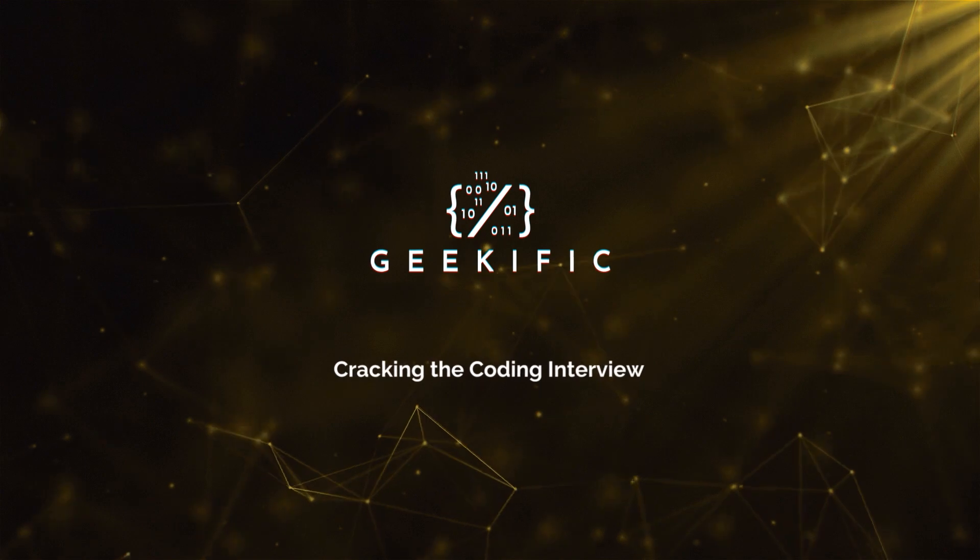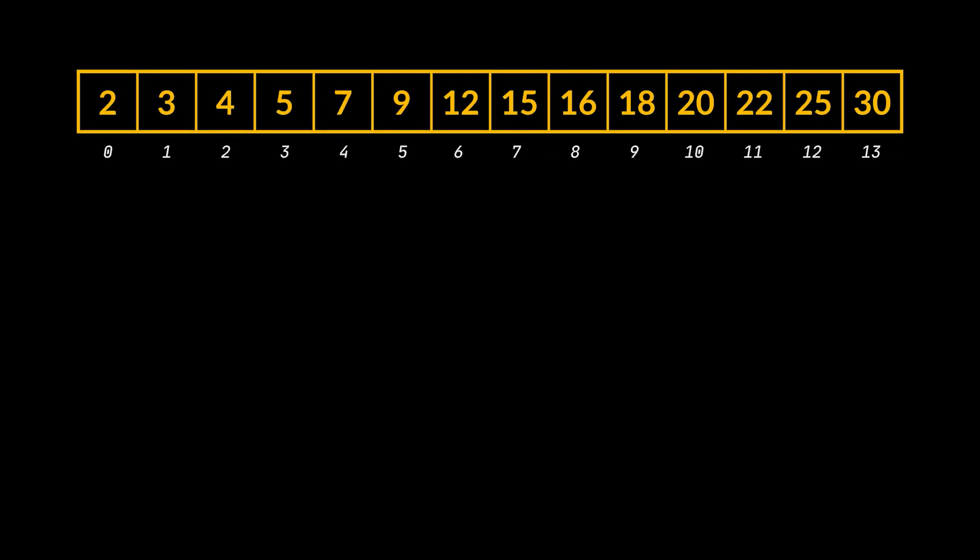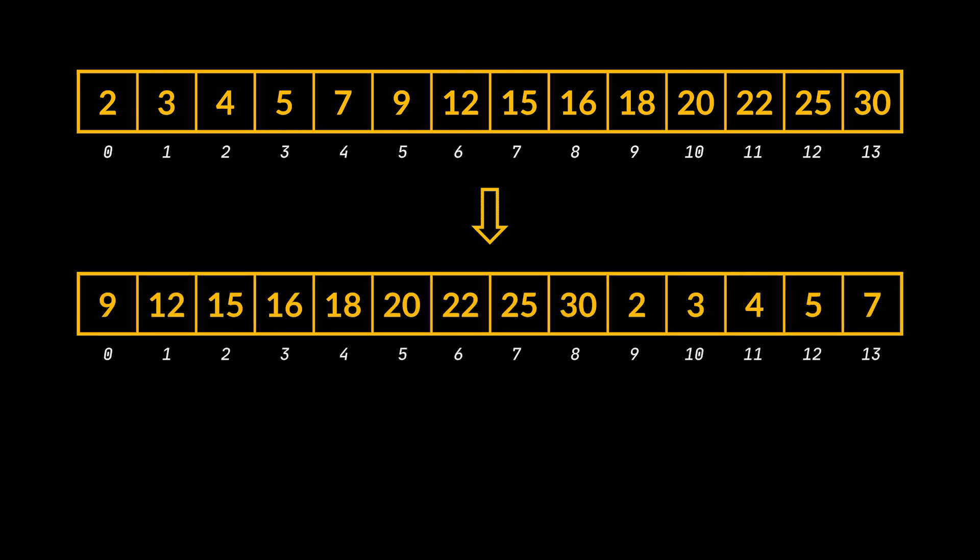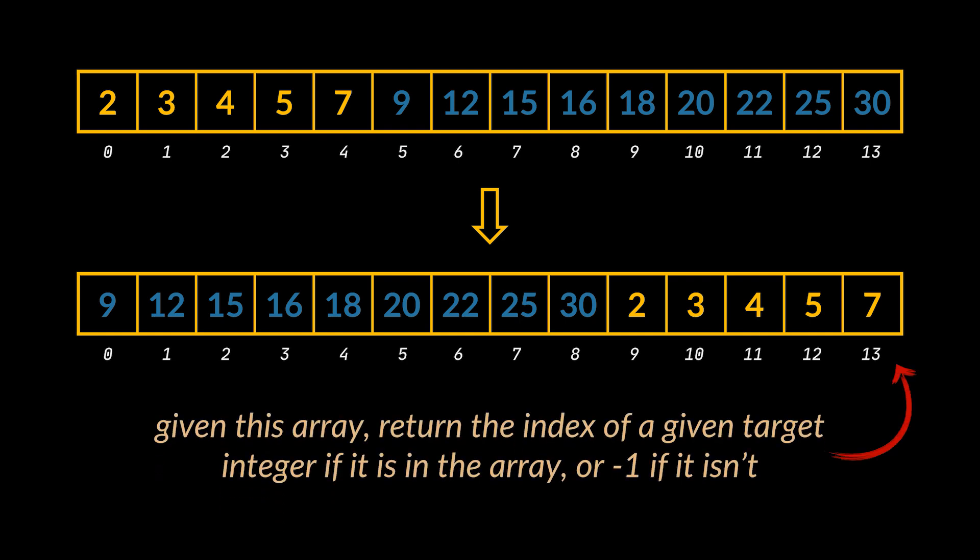What's up geeks and welcome to the channel. Suppose we have an integer array with distinct values sorted in ascending order. Prior to being provided with that array, it is possible that this array was rotated at an unknown index. For example, the first array you see in front of you might be rotated at index 5 to become the one below it. So given the array after the possible rotation and a target integer, what we must do is return the index of the given target if it is in the array, or minus 1 if it isn't.